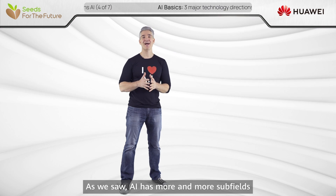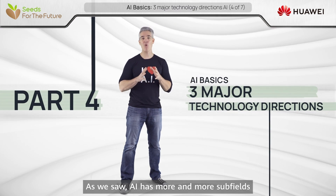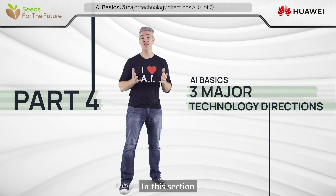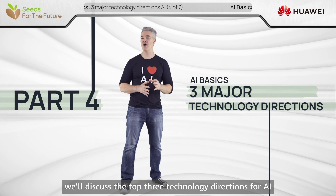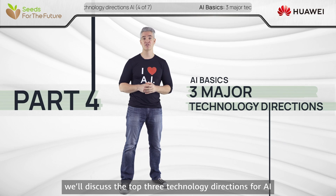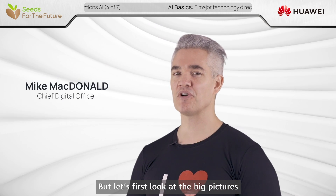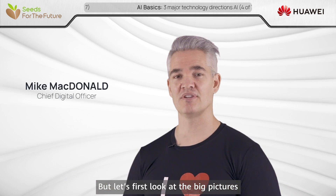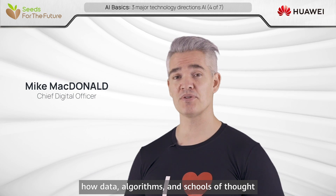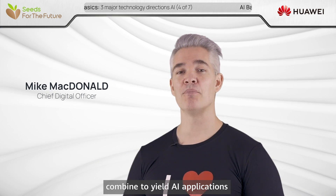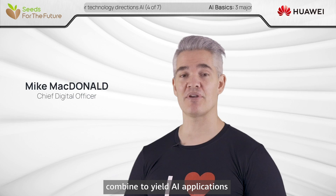Welcome back. As we saw, AI has more and more subfields. In this section, we'll discuss the top three technology directions for AI. But let's first look at the big picture: how data, algorithms, and schools of thought combine to yield AI applications.